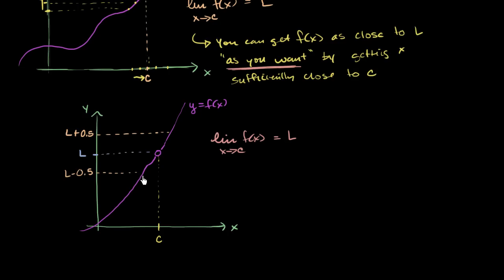It won't be that easy for all functions. But you look at it like this, and you say that this value, just the way it's drawn right over here, let's say that this is c minus 0.25. And let's say that this value right over here is c plus 0.25.